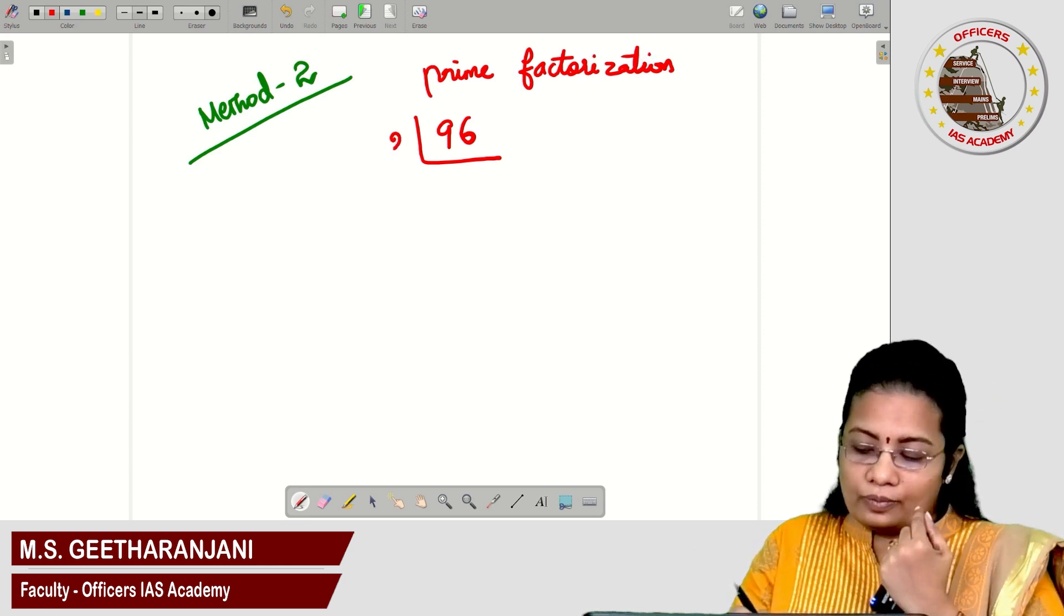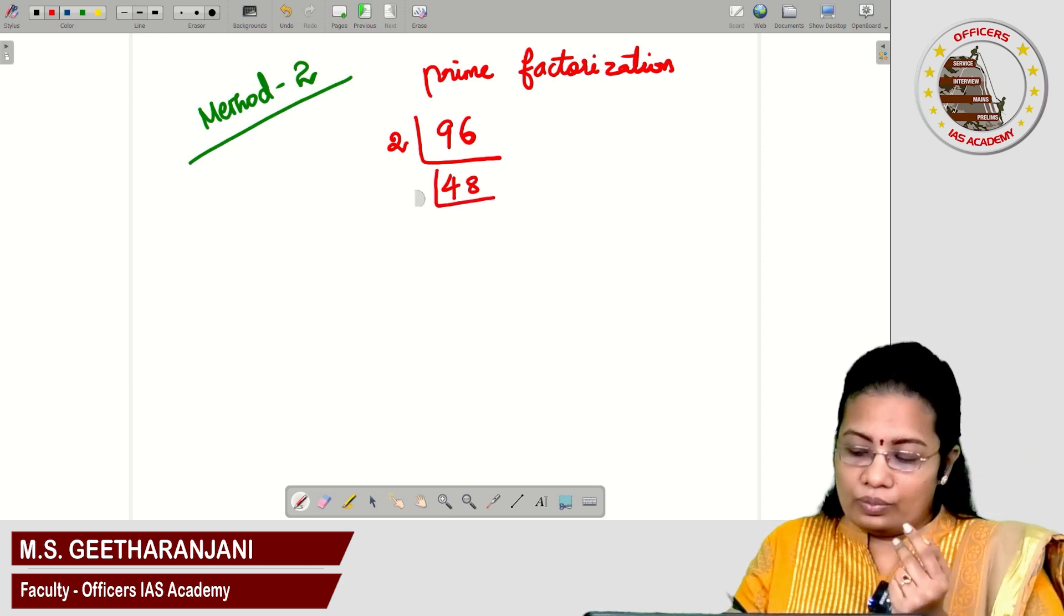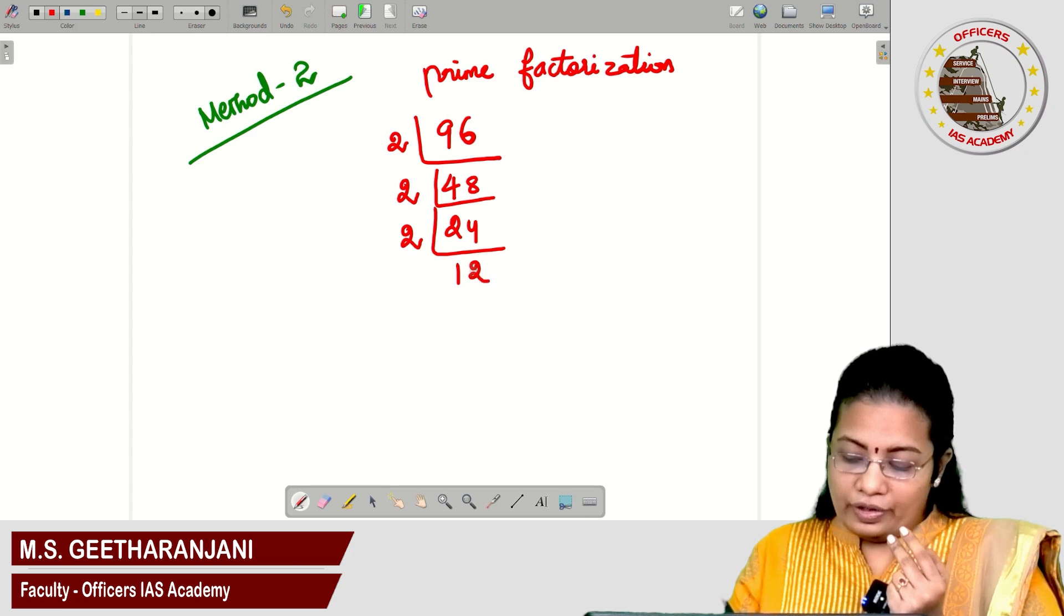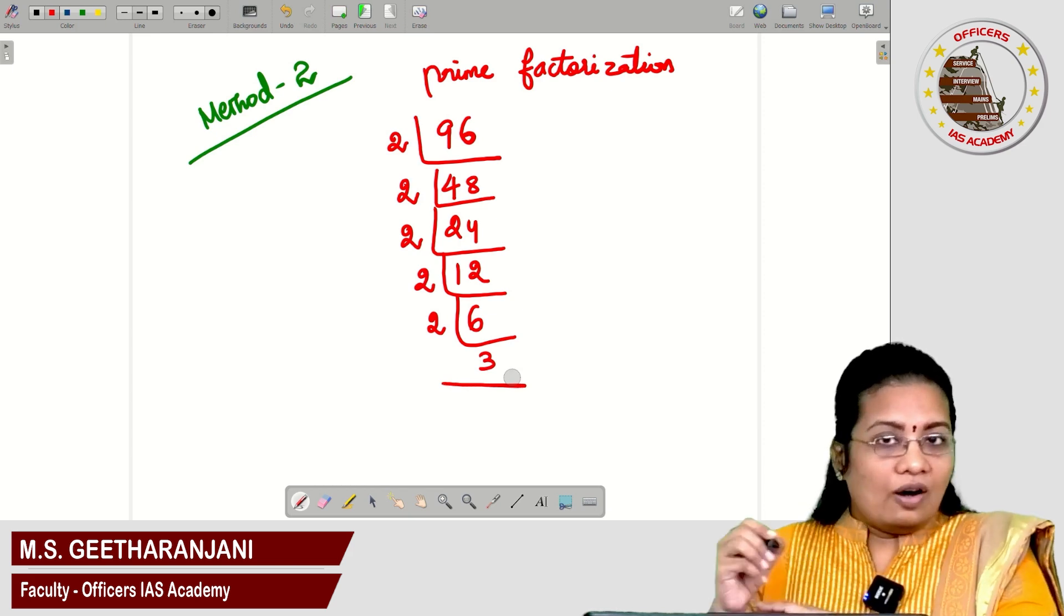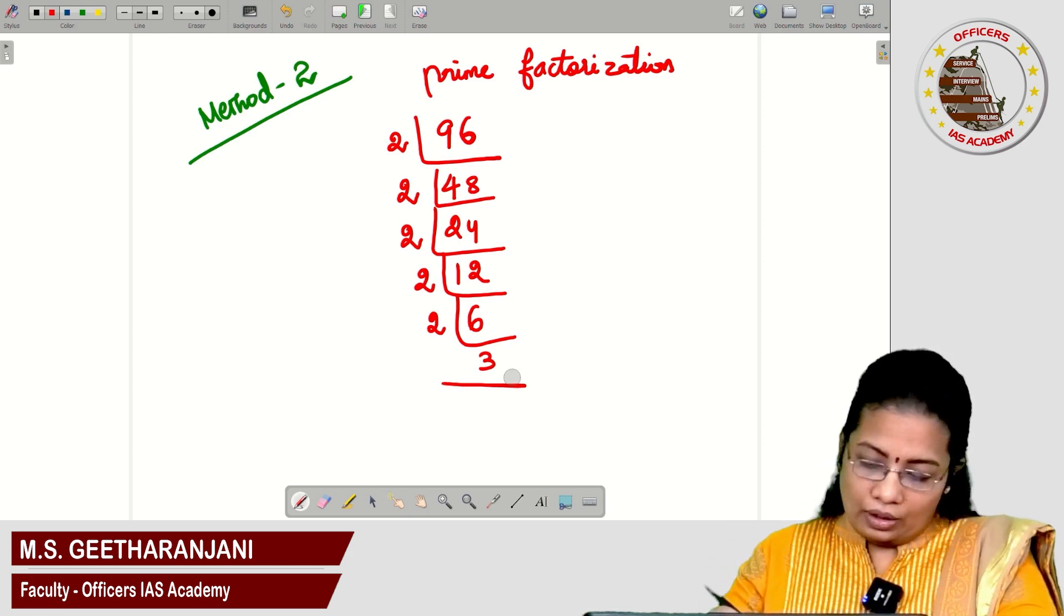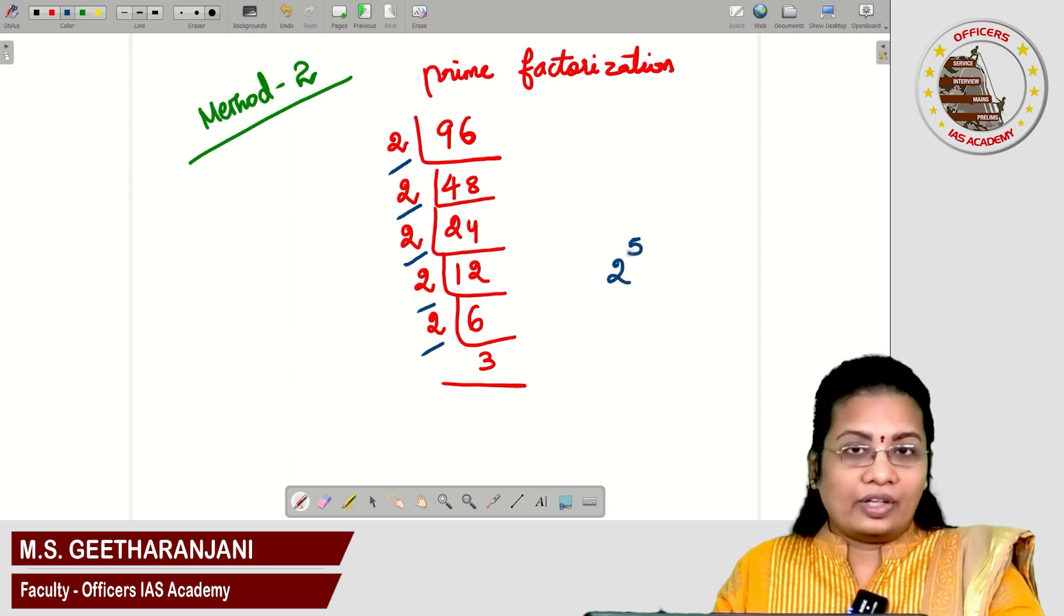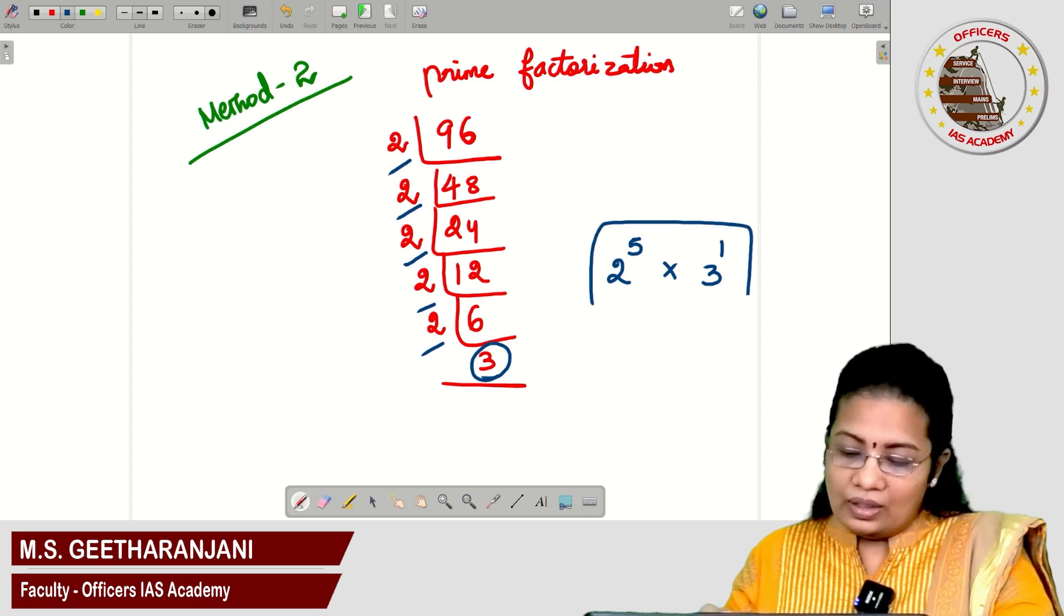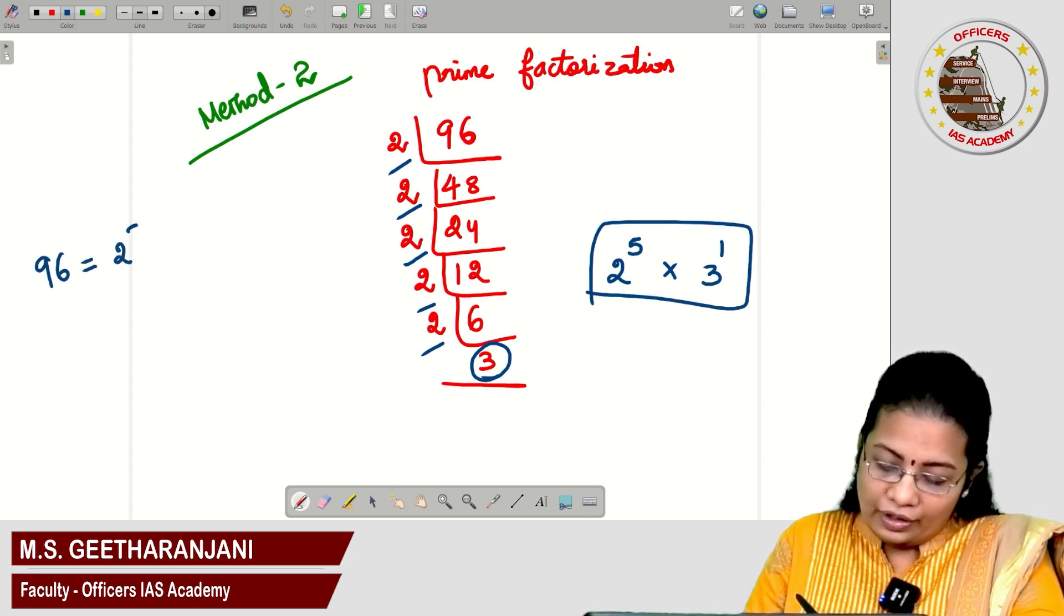In this prime factorization method, starting the number with 2. What is the value? 48 times. Again 2. 24 times 2 is 48. Again 2. 12 times 2 is 24. Again 2. 6 times 2 is 12. Again 2. Finally, we got 3. Under the prime factorization method, how many 2's are there? 5 times 2. You can write 2 power 5 into how many 3? Only 1 times 3. Simply, 96 can be rewritten as 2 power 5 into 3 power 1.